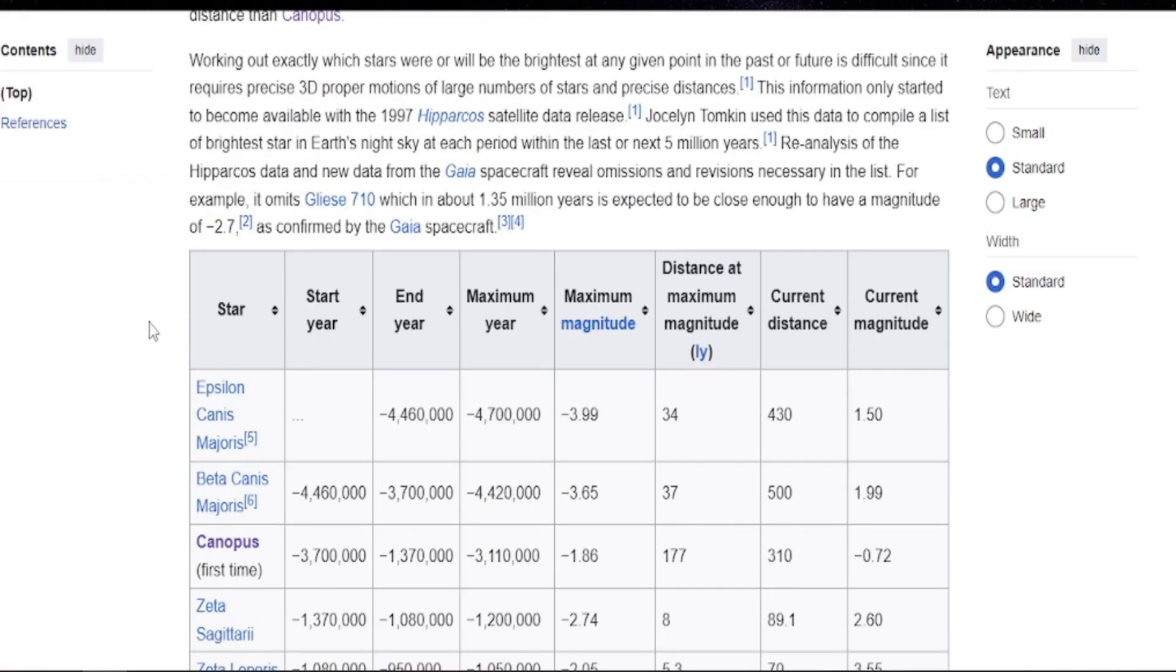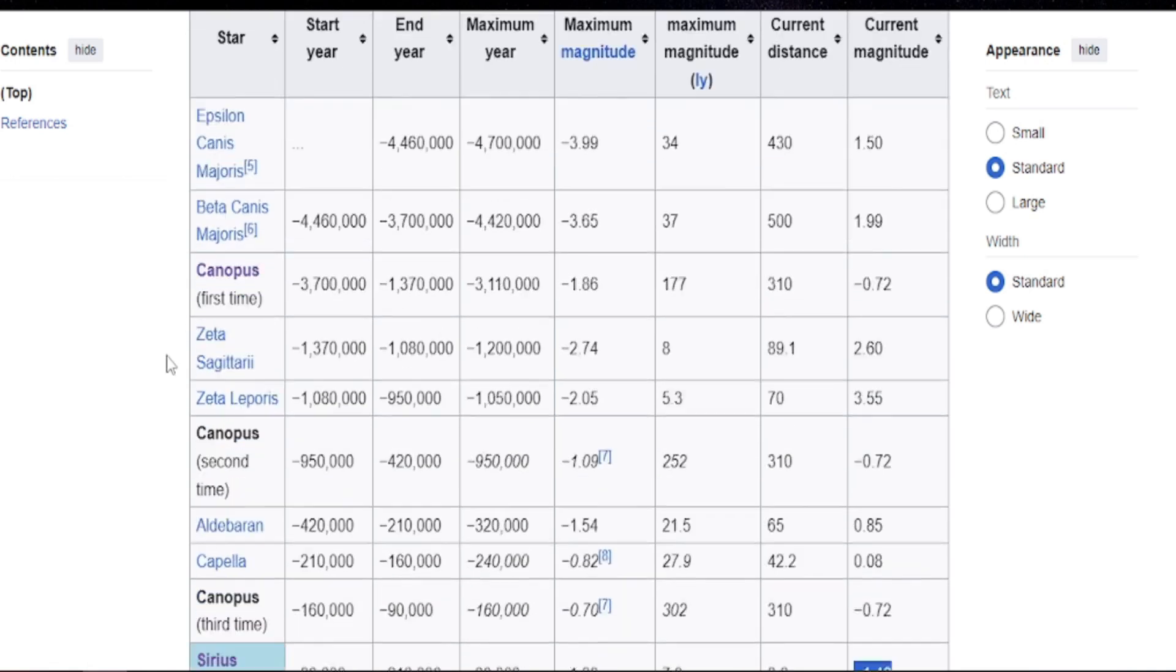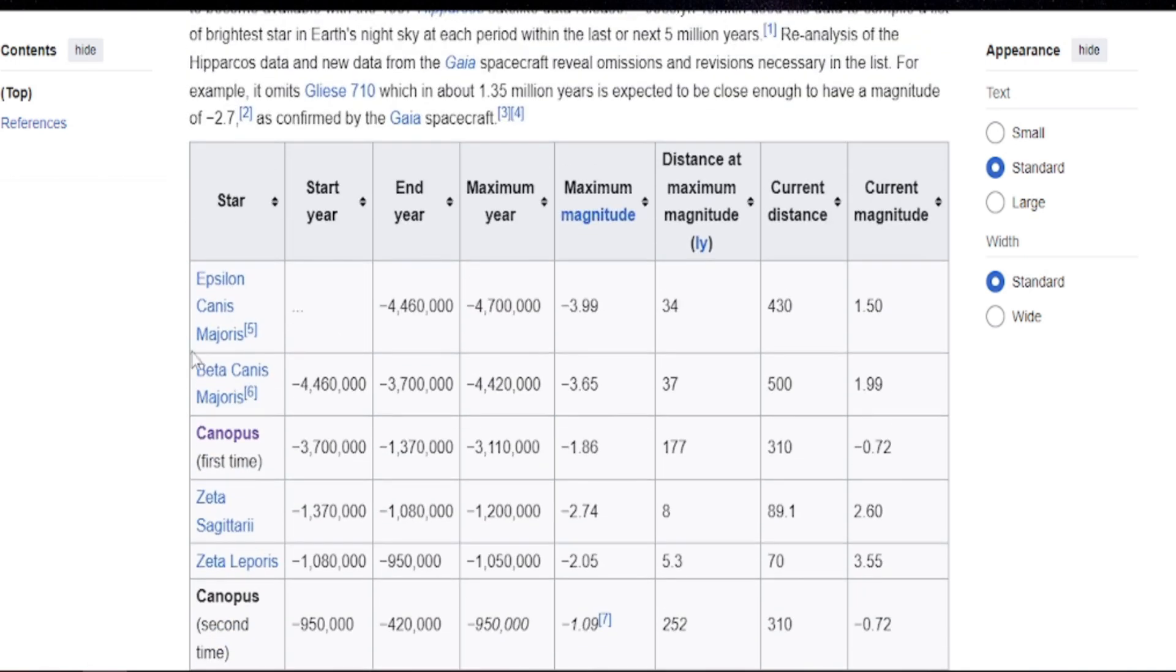Another thing about Canopus is really in most of history, certainly of human history on Earth, Canopus has been the brightest star in our sky. As we can see here in this list, about four million years ago, Canopus became the brightest star. And obviously it was a lot brighter then because it was closer, minus 1.86. So well at least half times bright as Sirius now again.